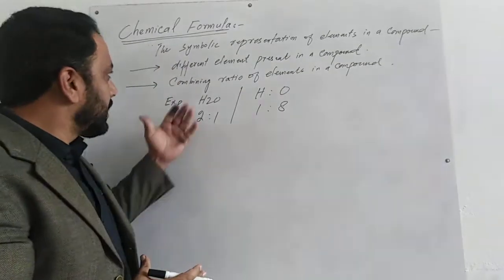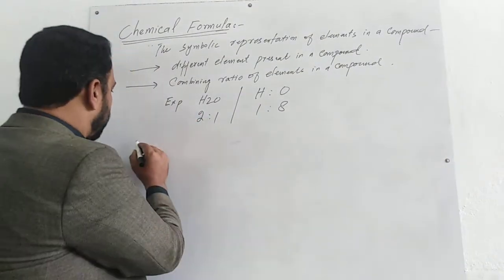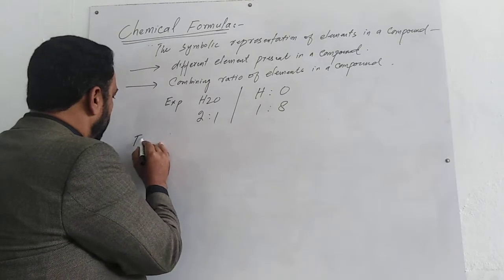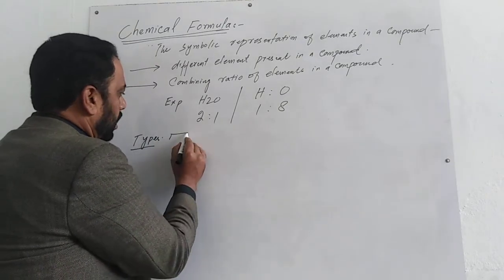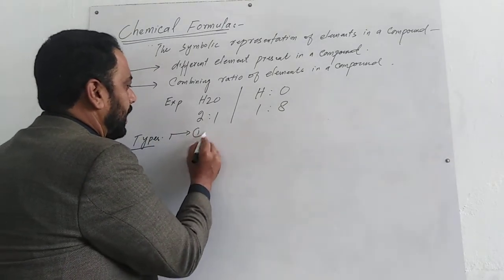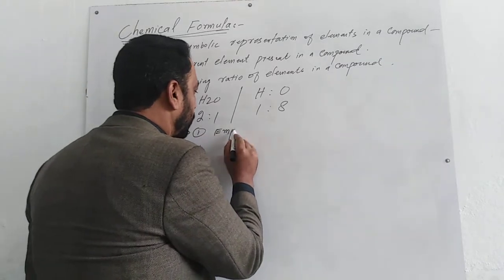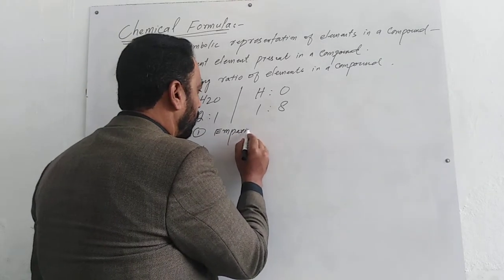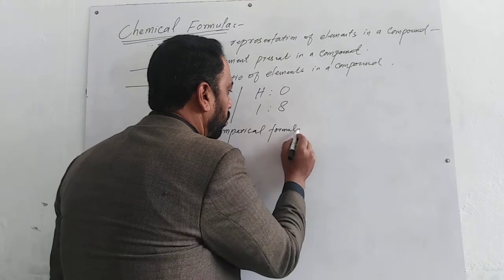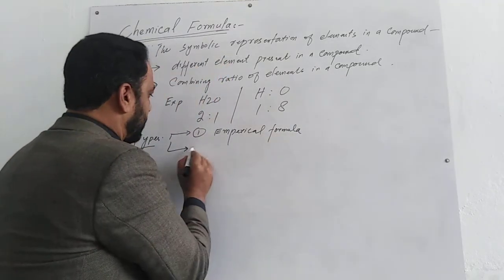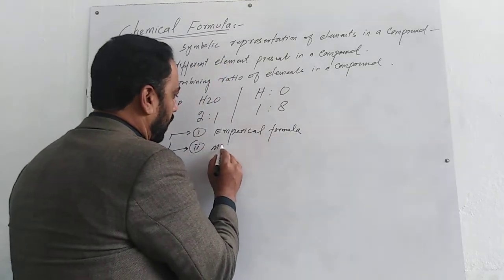Now we have chemical formula of two types: one is empirical formula and the other one is molecular formula.